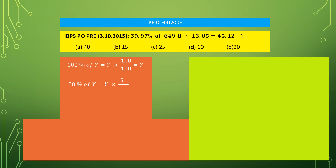If we have been asked to calculate 50% of Y, it means we are calculating Y into 50 by 100, that is we will just divide the value of Y by 2, so the result will be Y by 2. If it is asked to calculate 25% of Y, it means just divide Y by 4. These three are important points which you should remember.